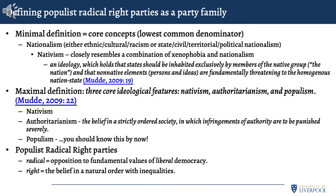Nationalism is often subdivided into ethnic and civic forms. In ethnic nationalism, the national community is held together by pre-existing characteristics — language, religion, customs — so the nation creates the state. In civic nationalism, the national community is defined by common citizenship and a shared worldview that many different people can hold — so the state creates the nation. Britain is an example: before the Acts of Union there were different national identities, and the new United Kingdom aimed to create a British national identity. But nationalism alone isn't enough to define a populist radical right party.